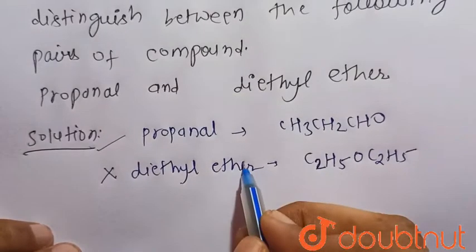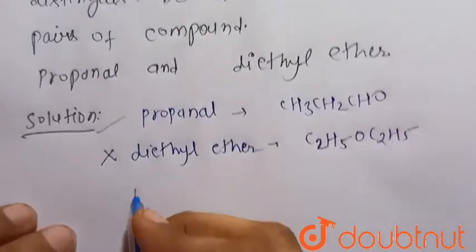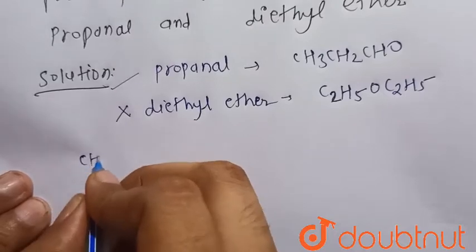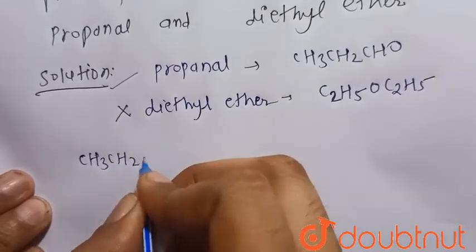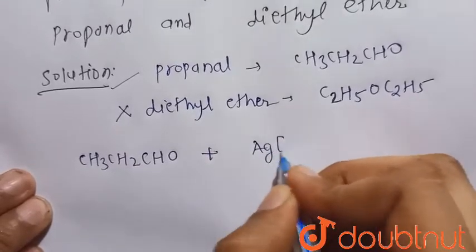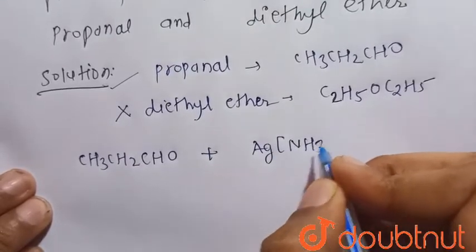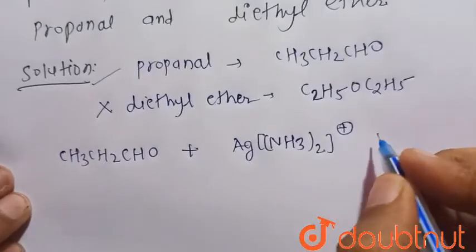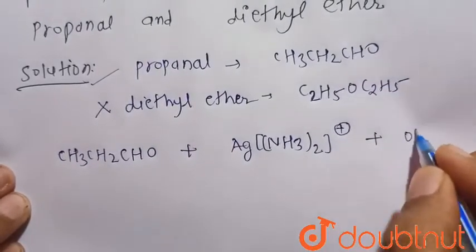Consider the reaction. So we know that propanol, that is CH3CH2CHO, when reacted with Tollen's reagent, that is Ag(NH3)2+ twice positive, and in the presence of base, that is OH-...